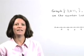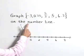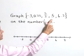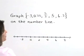Graph these numbers on the number line: negative three, 0.75, five-thirds, five, and 6.3.